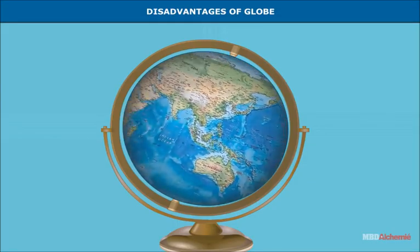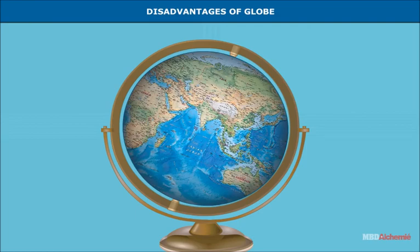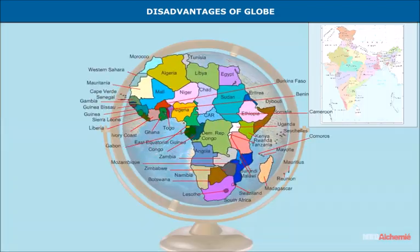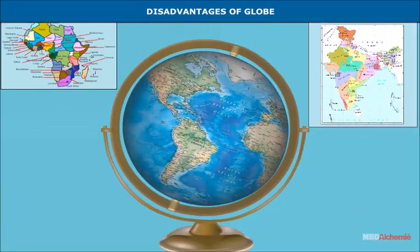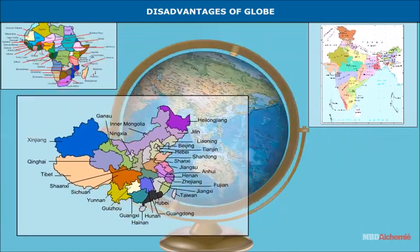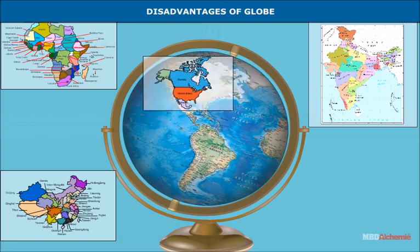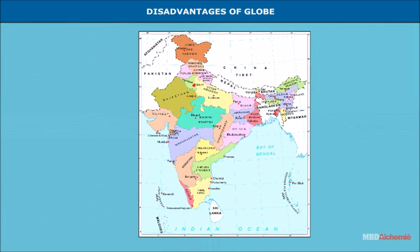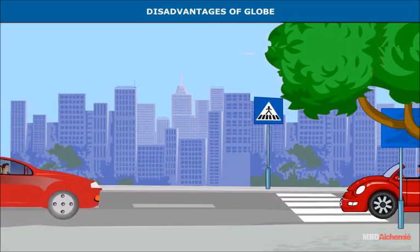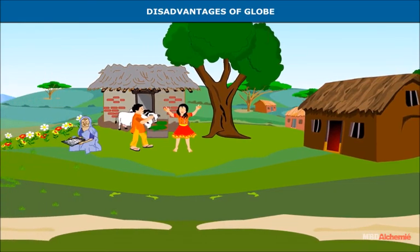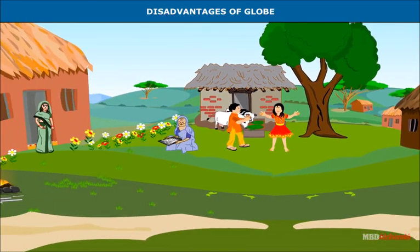Disadvantages of globe: Globes are usually small and can only be used to present basic information about sizable portions of the earth's surface. They cannot be used to convey detailed information such as about local roads, towns, and villages. This is because a globe is spherical in shape and a small area cannot be represented on the whole globe.